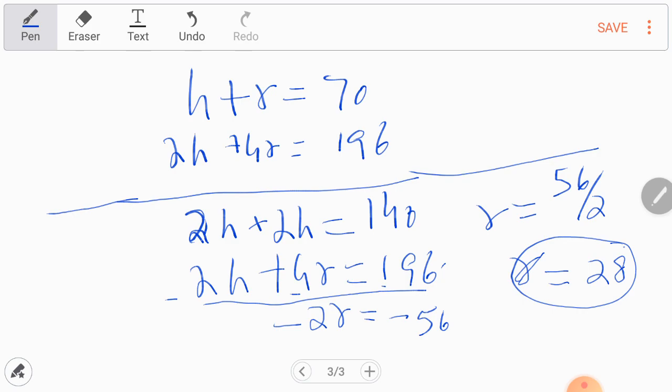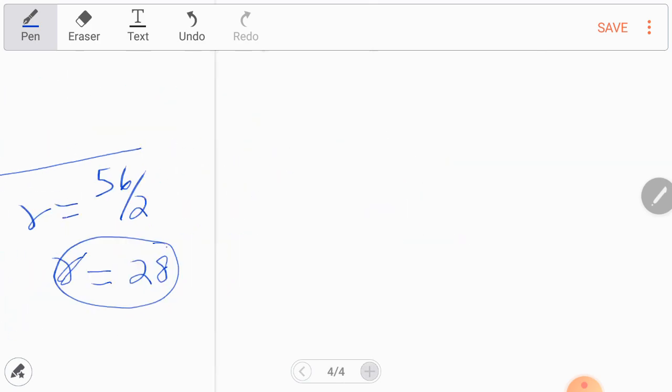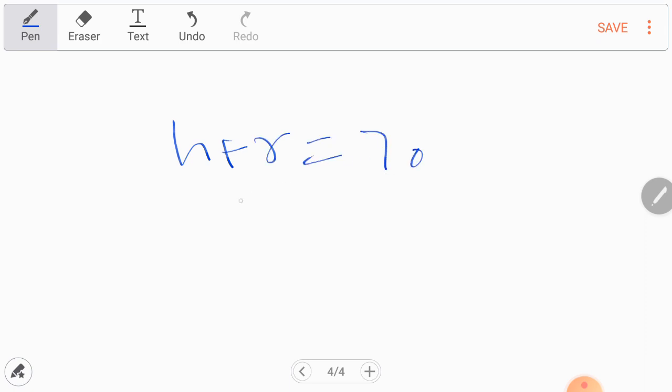Now, next we have to find number of hens. I can take first h plus r equals 70, and h equals 70 minus r. 70 minus 28 equals 42.